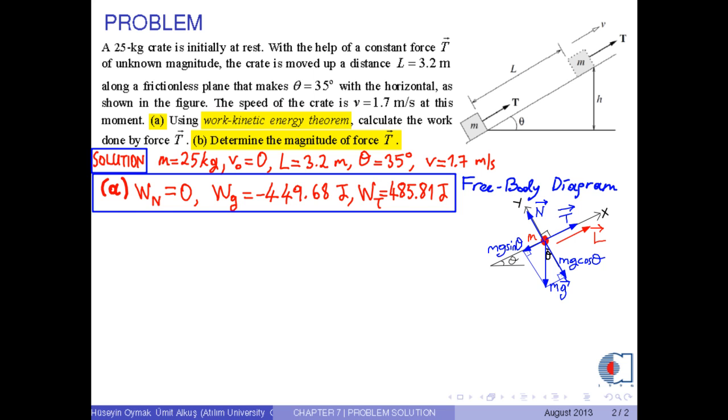Part B: Determine the magnitude of force T. By the definition of work, Wt equals T dot L. Because the angle between T and L is zero, we obtain T times L.